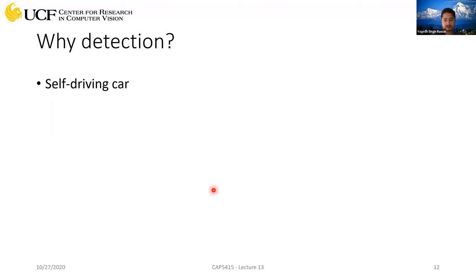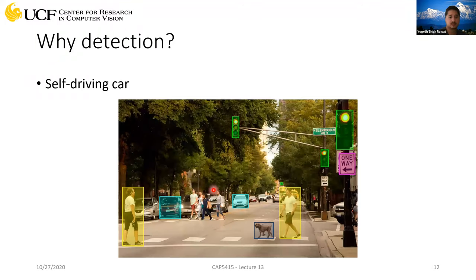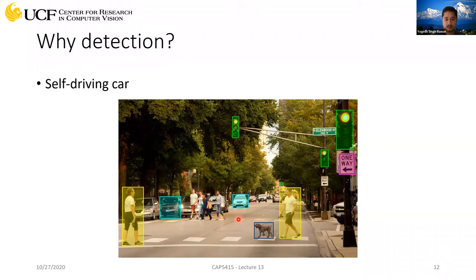For example, in self-driving cars, if we perform image classification, just saying 'two pedestrians are present' is not going to help. The car should know exactly where those pedestrians are located. If pedestrians are in the center of the road, the car should come to a halt and press brakes. But if pedestrians are walking on the sidewalk, that's perfectly fine. That's why we need detection.